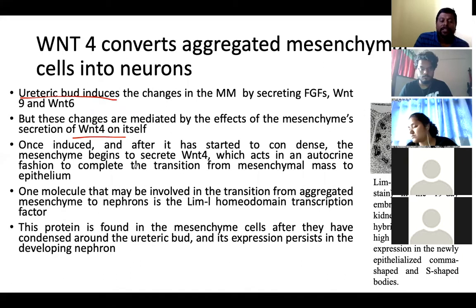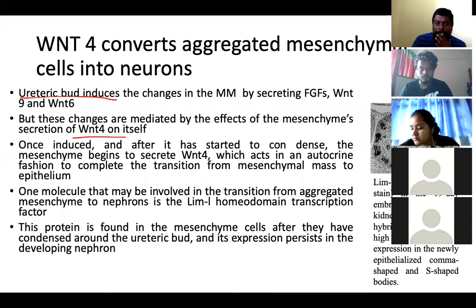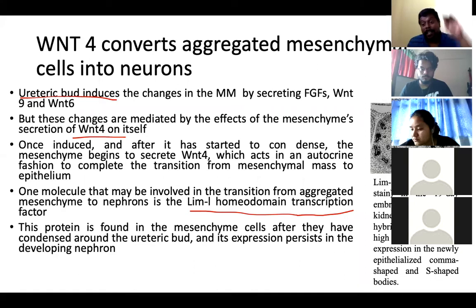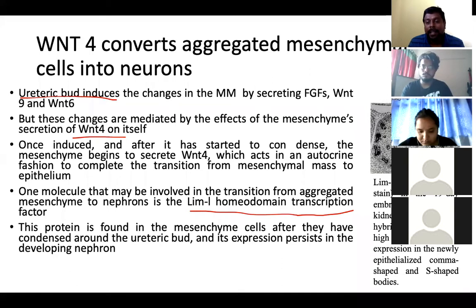WNT9 and WNT6 are produced from the ureteric bud. Once the mesenchymal cells aggregate and form a lamina, they themselves secrete WNT4 — acting as an autocrine factor that drives the mesenchymal cells to convert into an epithelial structure. Also identified is the LIM homeodomain transcription factor, which is expressed only after the mesenchymal cells become epithelial cells and continues throughout nephron formation, indicating an important role in kidney development.